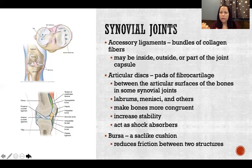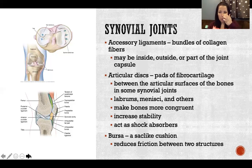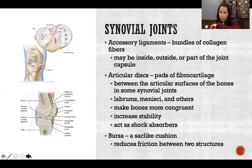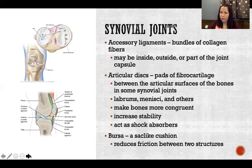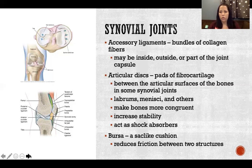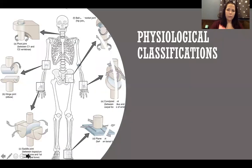When a bursa is healthy, you shouldn't be able to palpate it. For example, there's one at the tip of your elbow — you should only feel skin against bone and perhaps the tricep tendon. If the tip of your elbow feels swollen or bulging, that's an inflamed bursa. An impact, like falling on your elbow, can inflame it dramatically. This is bursitis, which we'll cover in more detail later.